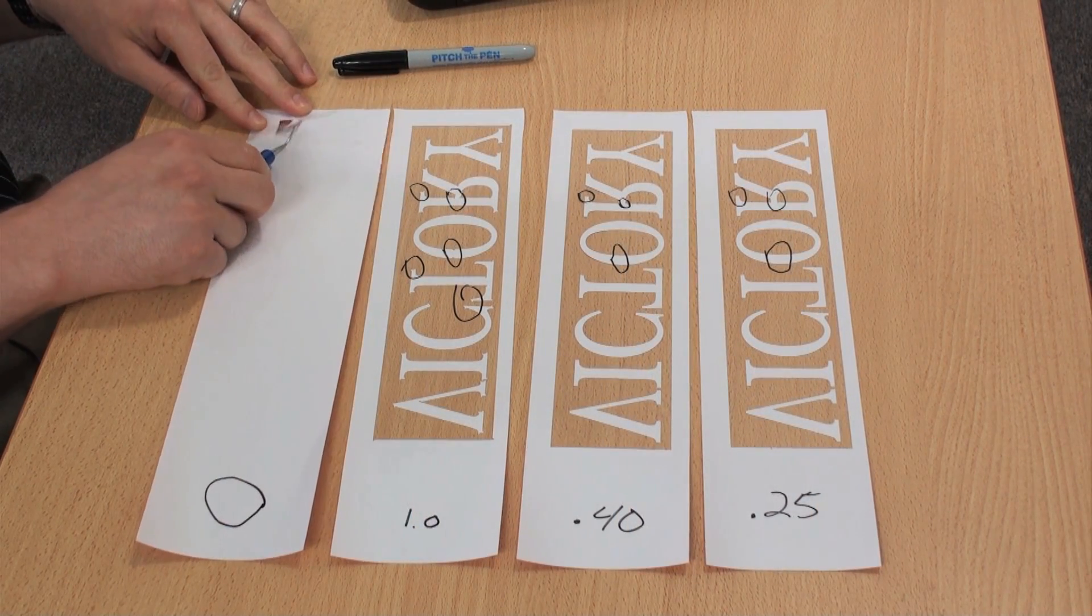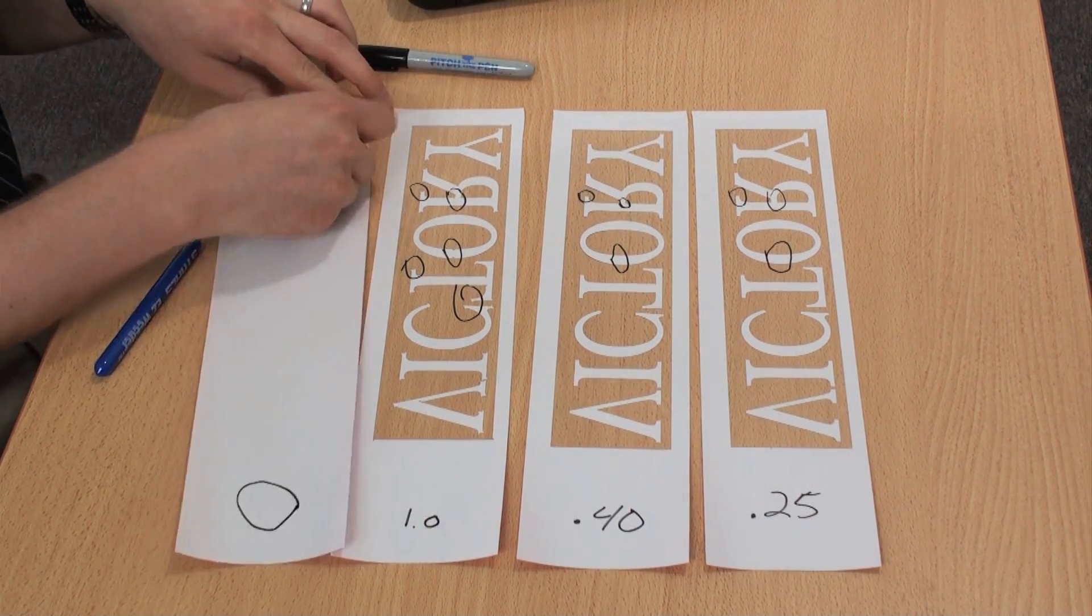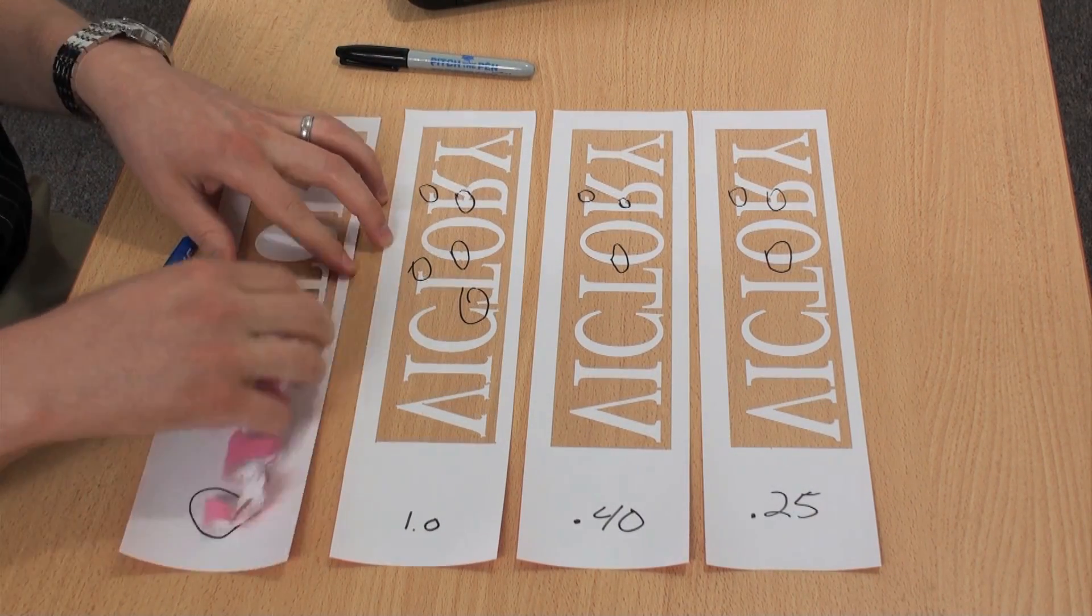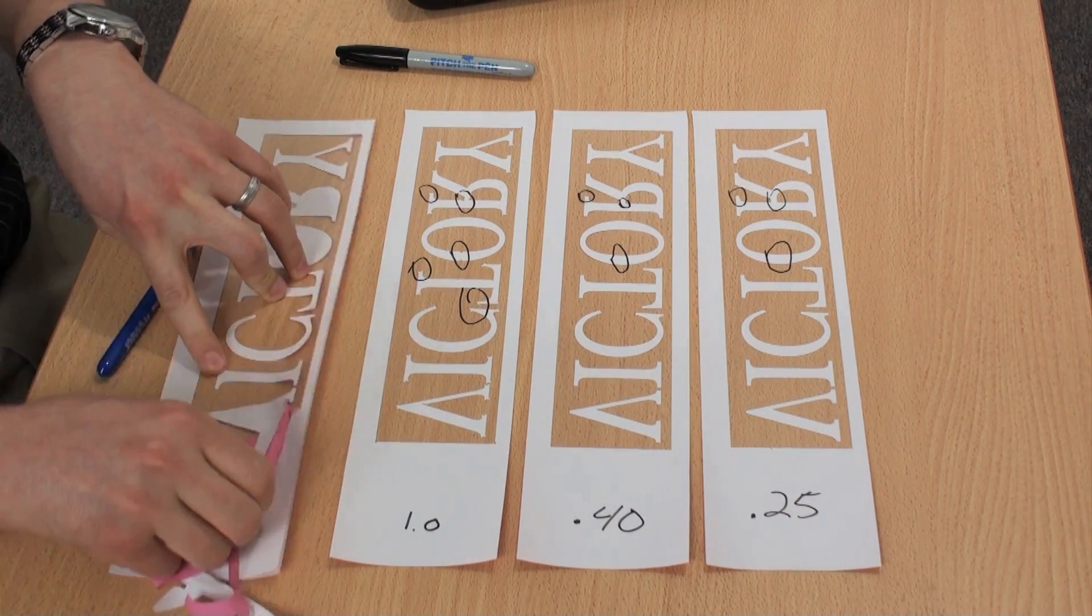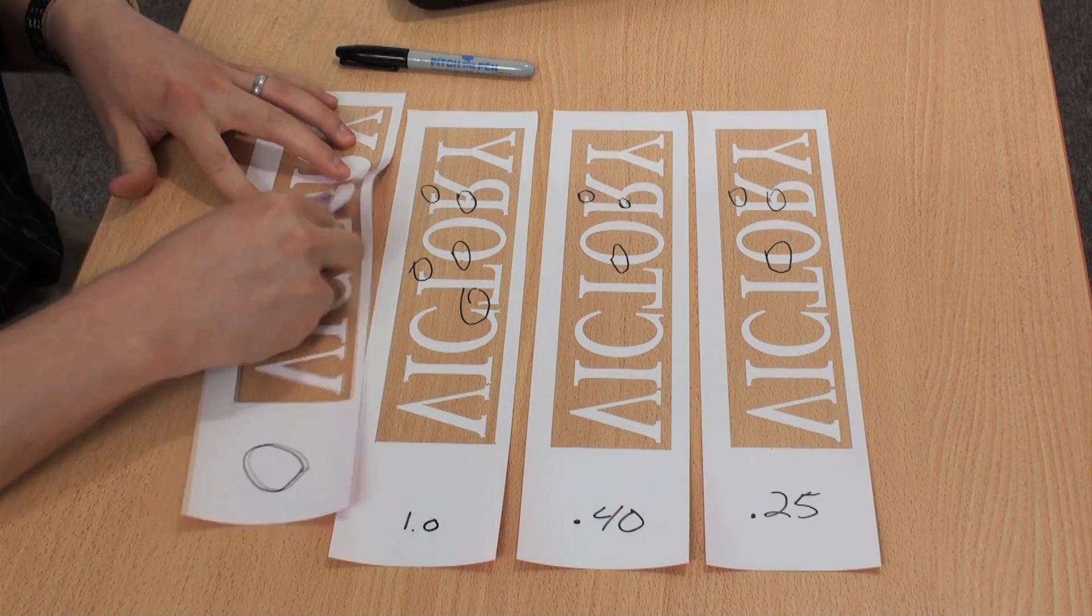And one last example. Let's show you when the offset isn't high enough. This is an offset of zero. It's actually lifting up my design at all the corners here. The corners are starting to round and it's not really wanting to complete the cuts.